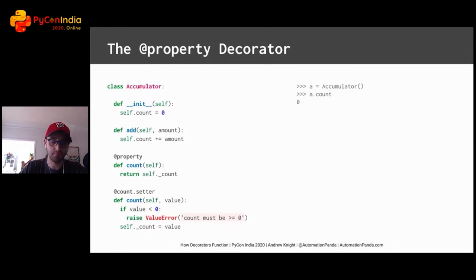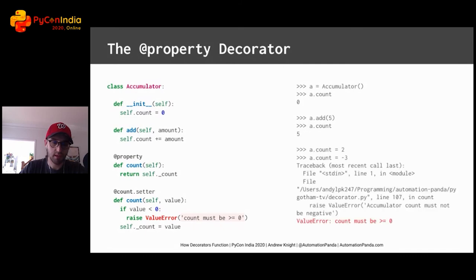Let's use this class. When an Accumulator object is constructed, its initial count is zero. After adding an amount to the object, its count goes up. Its count can be directly set to non-negative values. Attempting to set the count directly to a negative value raises an exception as expected.